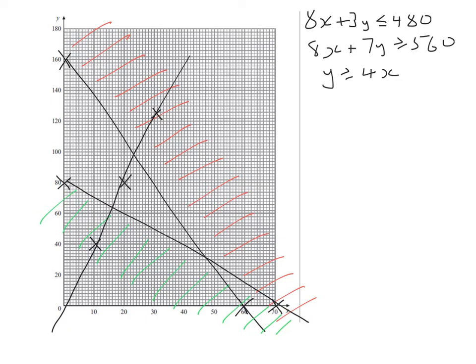We want y to be greater than or equal to 4x. So is it this side or is it this side? No point in choosing 0, 0 because on 0, 0 they're equal. So let's pick, say, x is 10 and y is 0. Is 0 bigger than 40? No, it isn't. So it's this side that we want, so we have to shade in this side. So let's do that in blue this time.